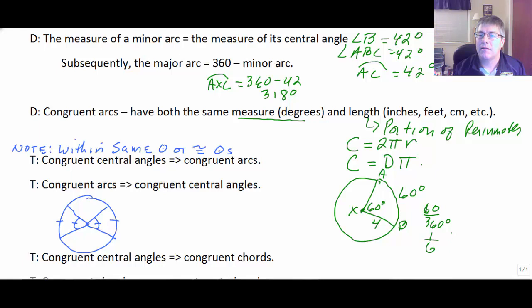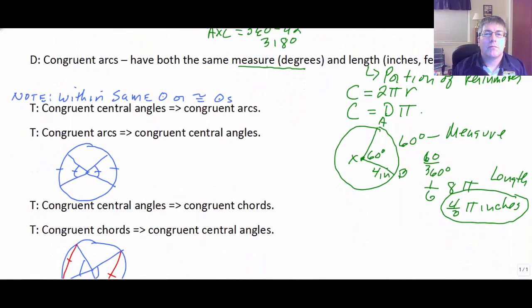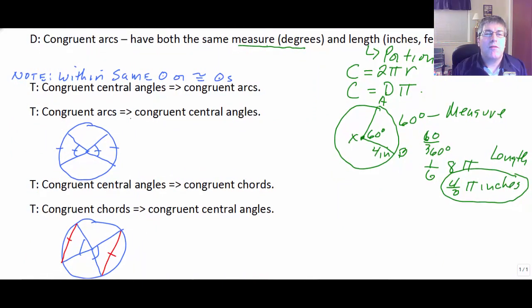Or one-sixth of 8π. Because our diameter, our radius is 4, so our diameter is 8. So 4/3π, we'll call it inches, or units. That would be our length. So our measure is in degrees, and our length is in feet or inches. It's a portion of the perimeter, or in our case, the circumference.